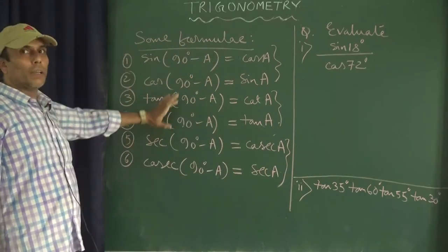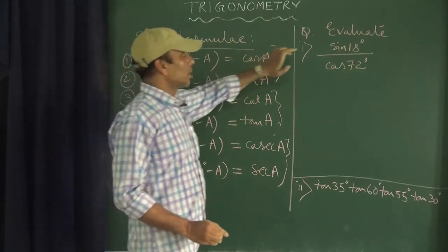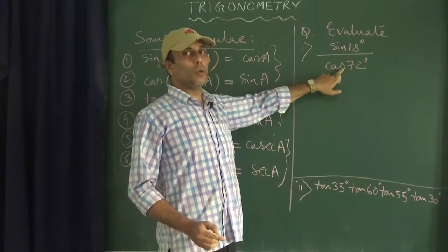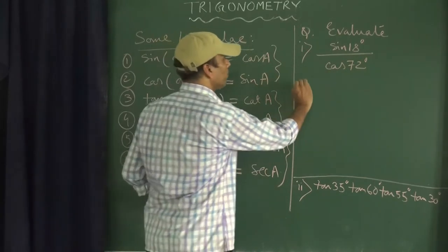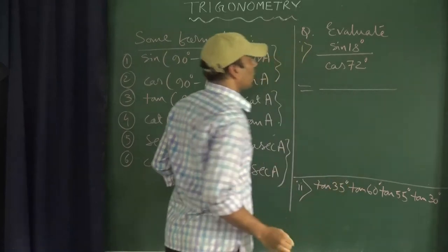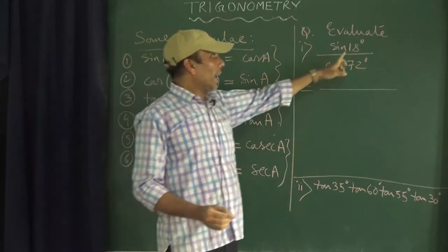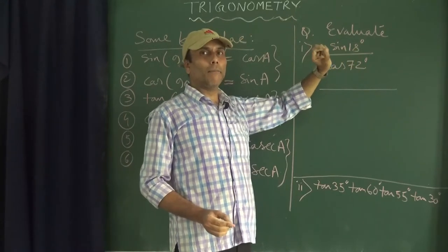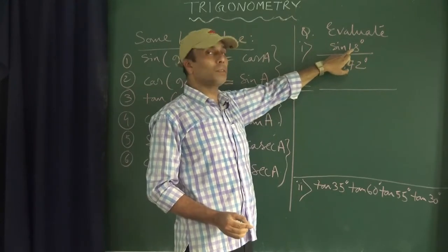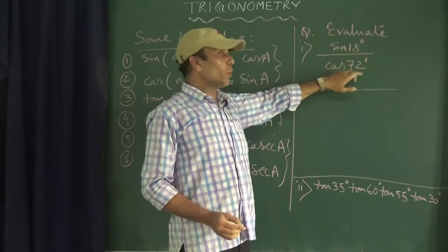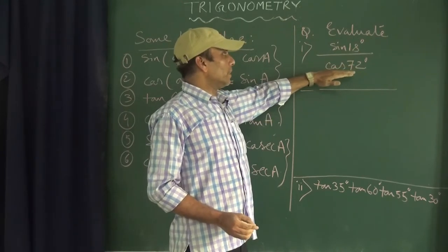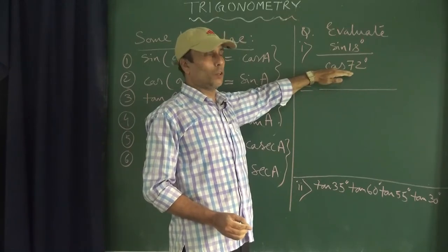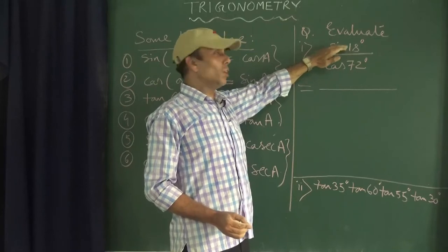If we know these formulas, we can solve some problems. Suppose our question is: evaluate sin18° divided by cos72°. Between numerator and denominator, one of the angles will be written as a difference of 90° and a particular number, so that the difference gives 18 or 72. We will keep the denominator the same, and do all the work with the numerator.